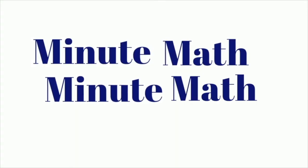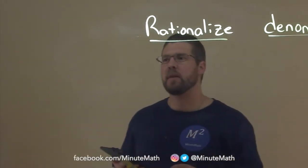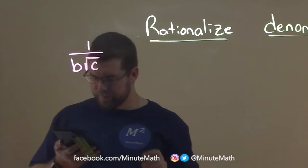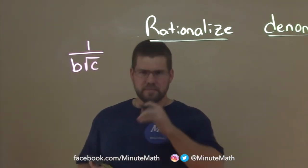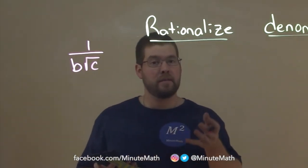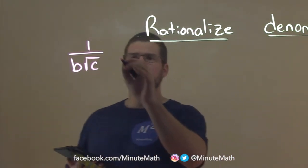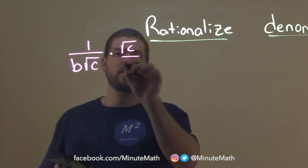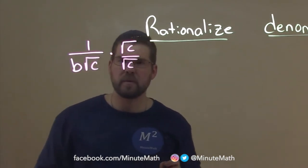A few things to note. If I have, let's say, 1 over b square root of c, to eliminate the square root in the denominator or, as they say, rationalize the denominator, I would have to multiply this by the square root of c over c.